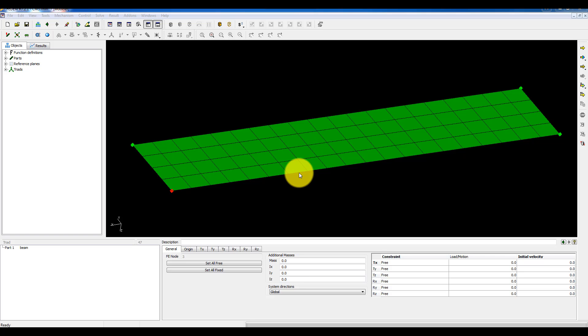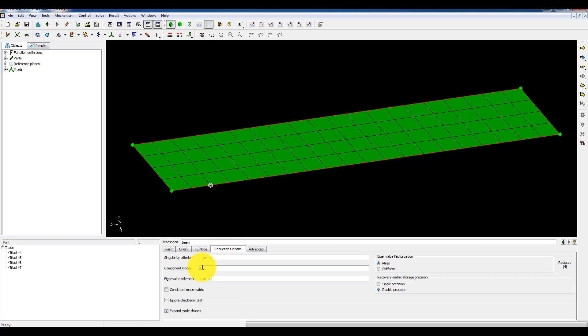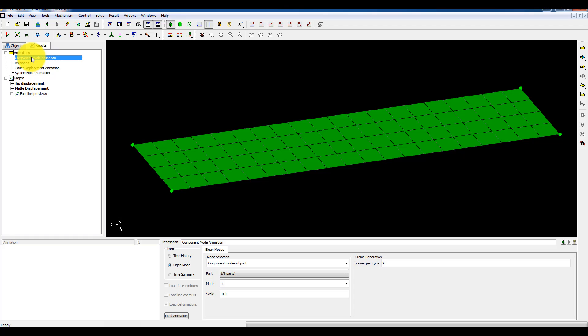And if this is sufficient to get an accurate distribution of internal displacements and stresses I'm fine. I can just use the static model reduction, but in this example I've chosen to include three component modes. And let's have a look at those component modes.